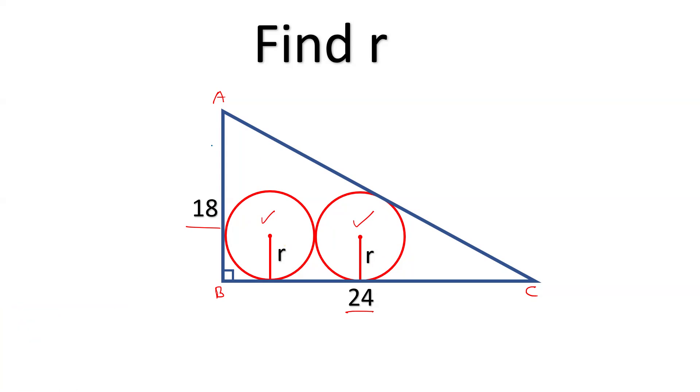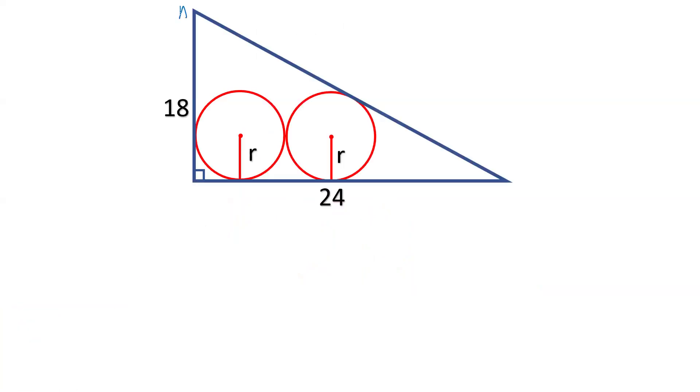First of all, let's name the triangle as ABC where AB is 18, BC is 24. Let's draw a line which is tangent to both circles. As this is 90 degrees, we have drawn a line parallel to this, tangent to both circles. This angle is also 90 degrees. Let's name this line as DE.